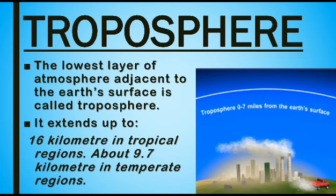First, we will discuss about troposphere. The lowest layer of atmosphere adjacent to the earth's surface is called as troposphere. It extends up to 16 km in tropical regions and about 9.7 km in temperate regions. In this layer, temperature decreases upward at the rate of 5.5 degrees per 1000 meters. The troposphere is the most significant layer of atmosphere.